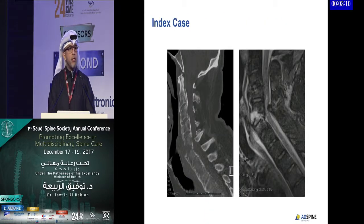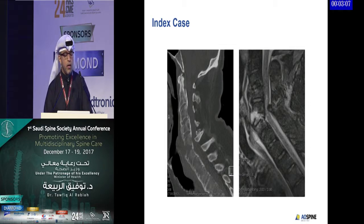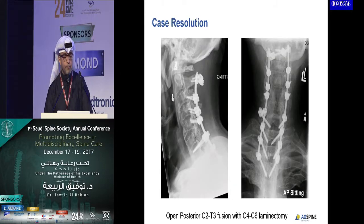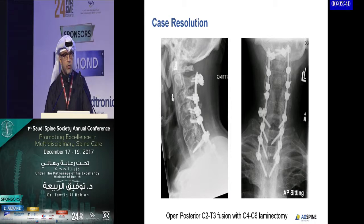Returning to our index case, a significant fracture through C5-C6 is visible with the corresponding MRI image. What was done for this patient was an all-posterior open fusion from C2 all the way to T3 — a long fusion to prevent lever arm failure — with C4-C5 laminectomy, given the patient's preoperative neurological compromise and to prevent further epidural hematomas.